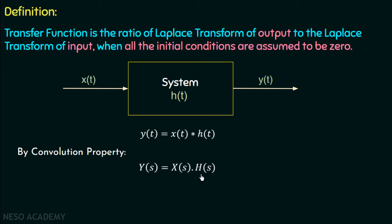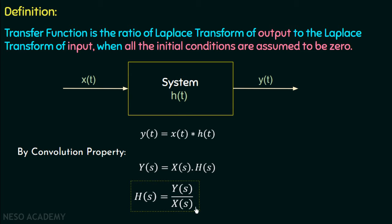From this equation, if we take the ratio of Y(s) to X(s), then we have H(s) = Y(s) / X(s), and this is the transfer function of the system. We have defined the transfer function for this LTI system, so by default the initial conditions are zero. But if we define the transfer function for an arbitrary system, then the initial conditions must be equal to zero. To understand this in a better manner, we will take one example.